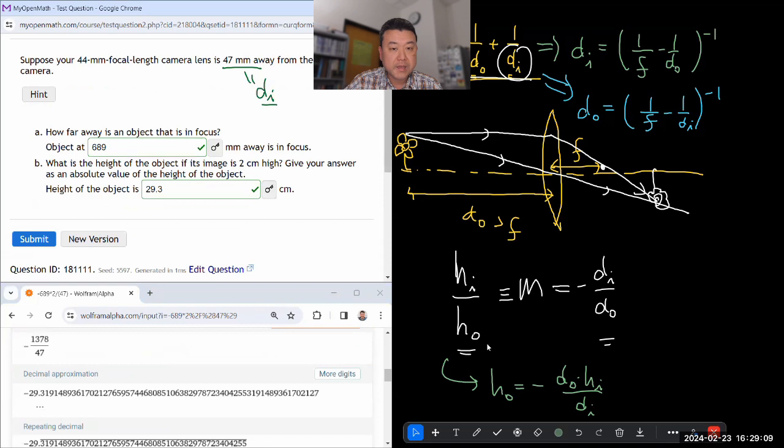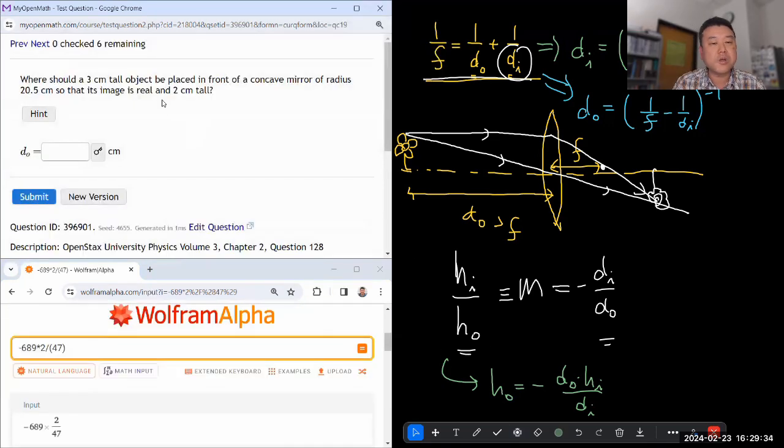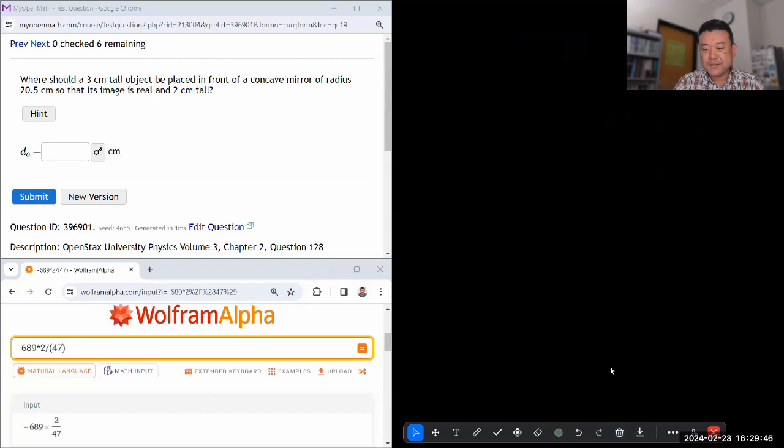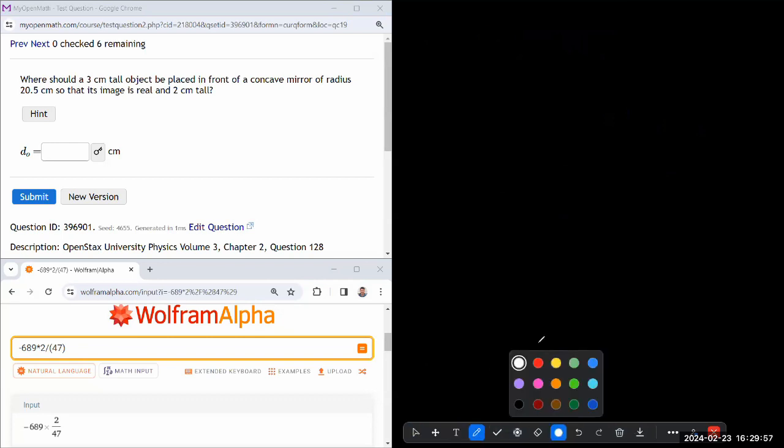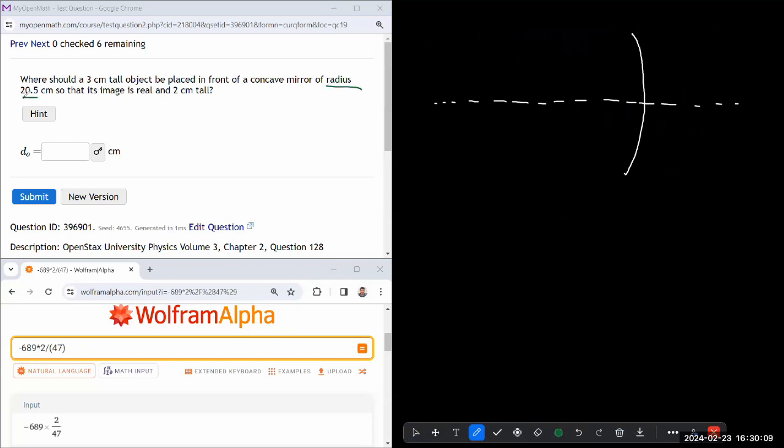Third and last question in this set. Where should a 3 centimeter tall object be placed in front of a concave mirror? That is so different. Let me erase all this and sketch the whole thing from scratch. We have a concave mirror of some radius. I'm going to interpret it as telling us the focal length. If it has radius 20.5 centimeters, then focal length is half of that, 10.25 centimeters. If it's a concave mirror, that's a converging setup. It's plus 10.25 centimeters.